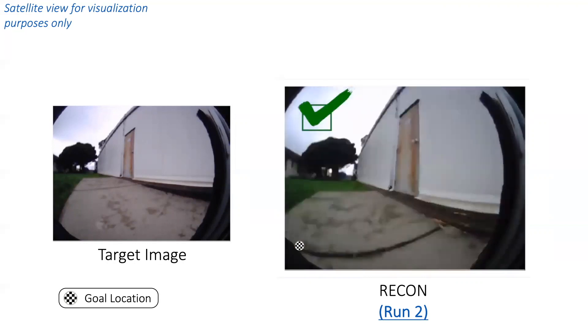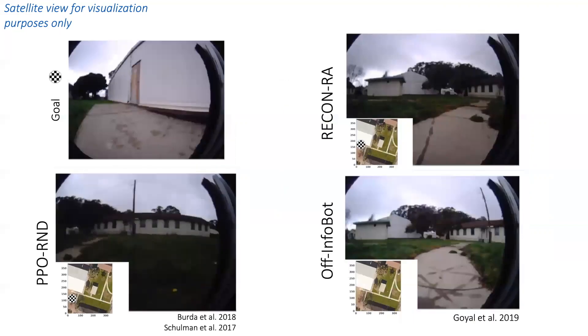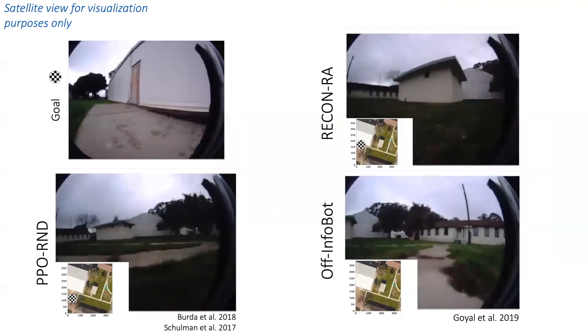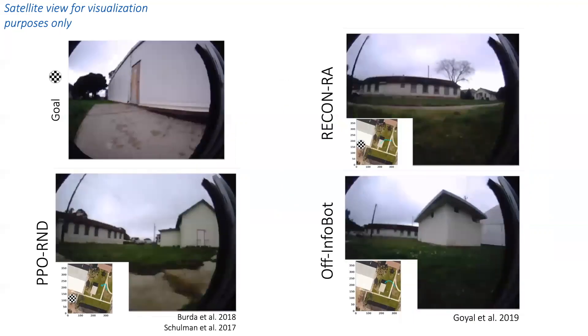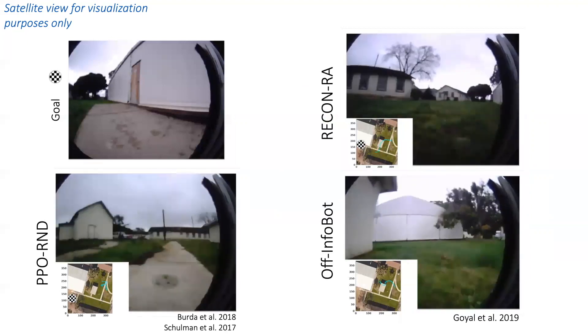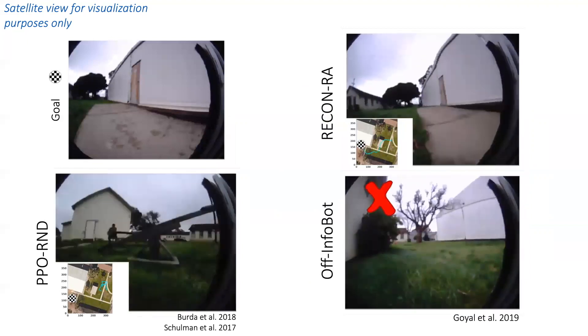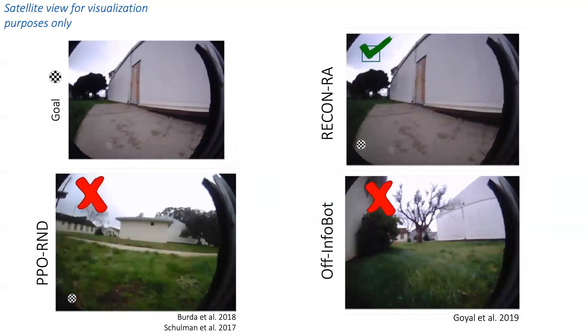Comparing this performance to baselines, RECON-RA, a variant of our method with random action sampling instead of sampled goals from the VIB latent space, is also able to successfully reach the goal, but it takes much longer to discover the goal and follows an inefficient path. The other baselines, PPORND and Off-Infobot, are unable to discover a path to the goal in over 40 minutes of exploration.